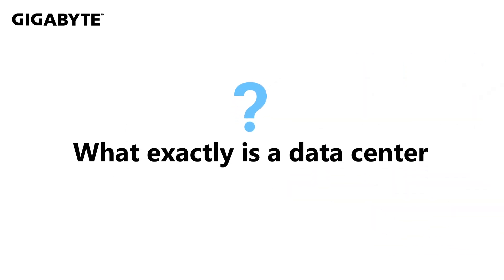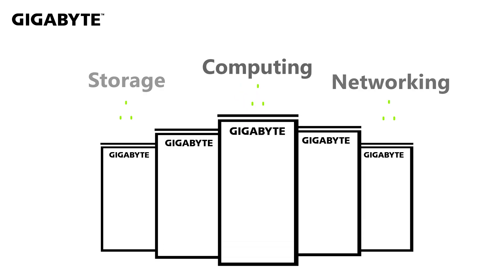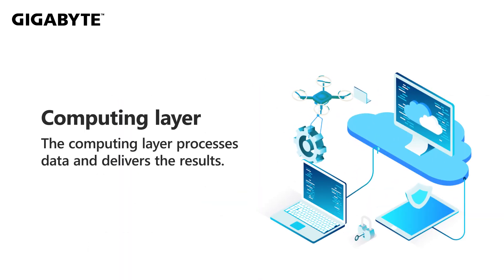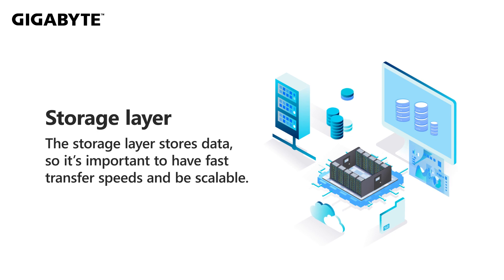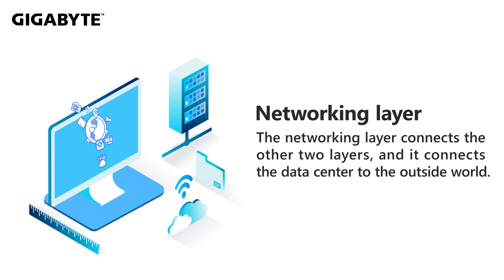What are the components of a data center? A data center has three layers: computing, networking, and storage. The computing and storage layers consist mainly of servers, which are Gigabyte's specialty. The computing layer processes data. The storage layer stores data, so it is important to have fast transfer speeds and be scalable. The networking layer connects the other two layers and connects the data center to the outside world.